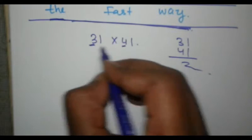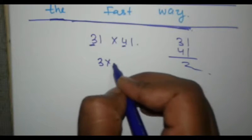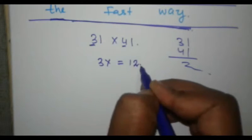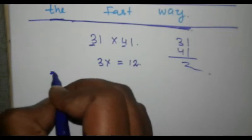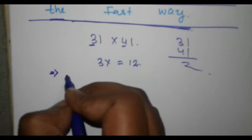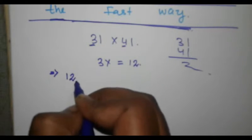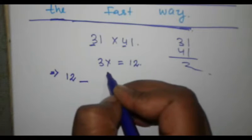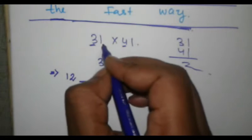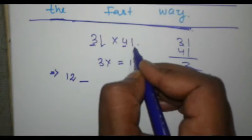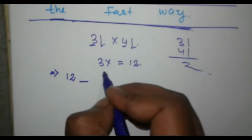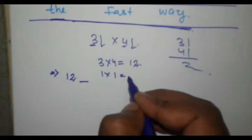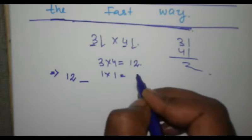You take the tens digits: 3 and 4. Three into 4 is equal to 12 — write the answer here and leave a space. Then you multiply the units digits: 1 into 1 is equal to 1, and you write 1 over here.